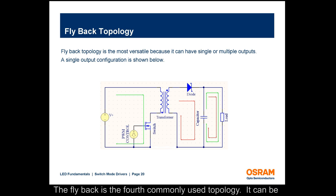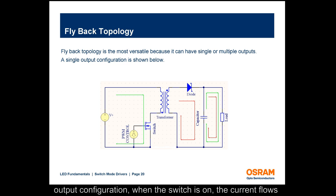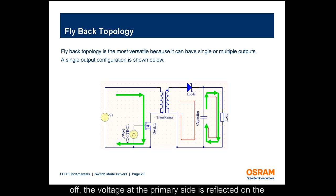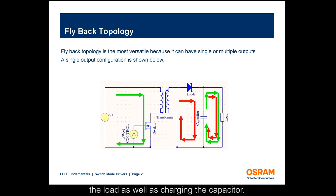The flyback is the fourth commonly used topology and can be configured for single or multiple outputs. In single output configuration, when the switch is on, current flows through the primary side of the transformer, and the load is supplied by the capacitor. When the switch is turned off, the voltage at the primary side is reflected on the secondary side, which causes the diode to conduct, supplying the load as well as charging the capacitor.